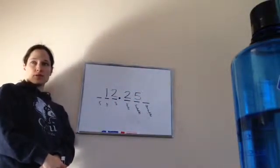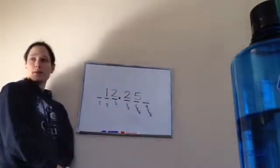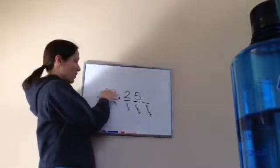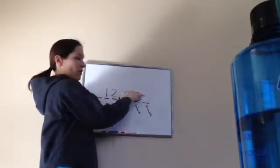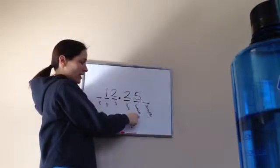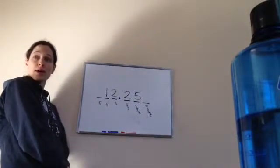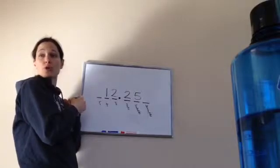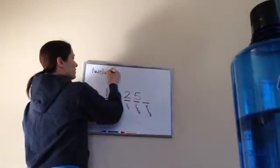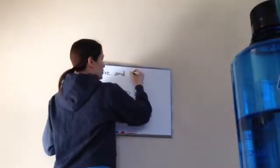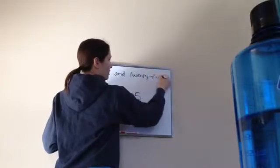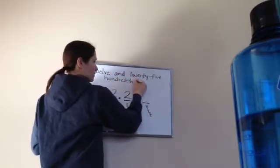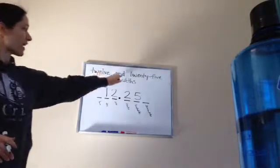Twelve and twenty-five hundredths — very good, exactly right. You say whatever numbers are on the left — twelve — and then whatever numbers are on the right — twenty-five — and wherever it ended, you say that place: hundredths. So if you were to write this using words, it would be: twelve and twenty-five hundredths.